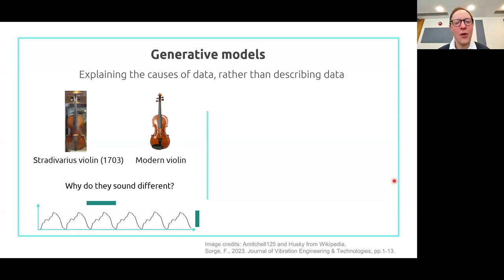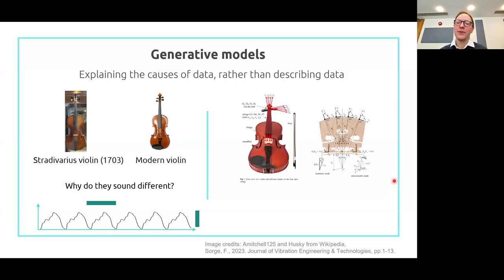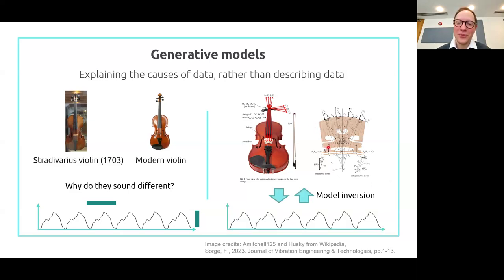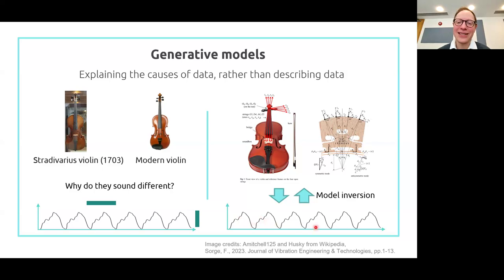But at the end of that, you'd have absolutely no idea why one instrument sounded better than another. That's a data features or description kind of approach. To answer the question, we have to go deeper into the mechanisms of how the sound was generated, and for that we need a model. A model here would put together everything that is known about how violins generate data — you could specify a model that lets you change the materials and qualities of different parts of the instrument, do little virtual experiments, and see how it affects the predicted data. You can then compare that to your real data and see what differs between two instruments not in terms of the observed data, but in terms of the underlying parameters — the underlying mechanisms.